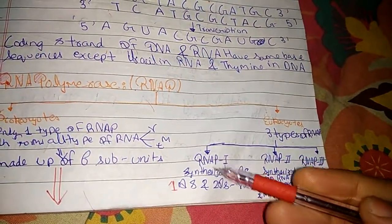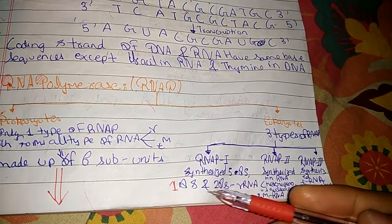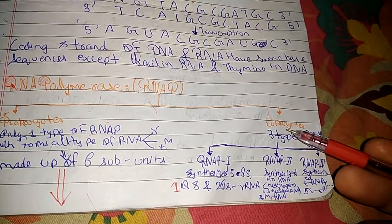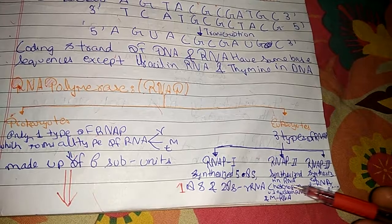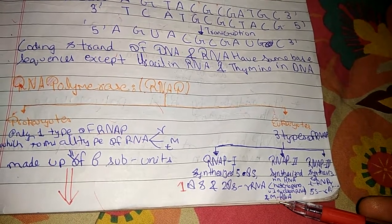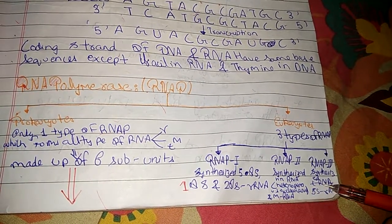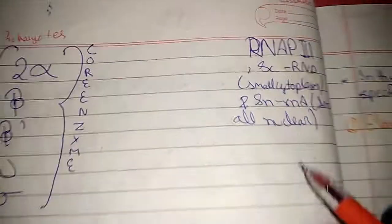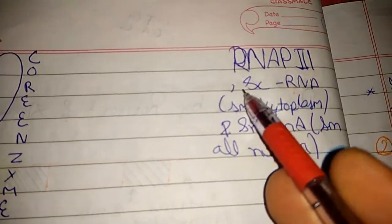Eukaryotes have three types of RNA polymerase. First is RNA polymerase I, synthesizes 5.8s RNA, 18s RNA, 28s RNA. RNA polymerase II synthesizes heteronuclear RNA and mRNA. Third synthesizes tRNA, 5s RNA, small cytoplasmic RNA.